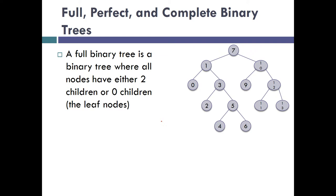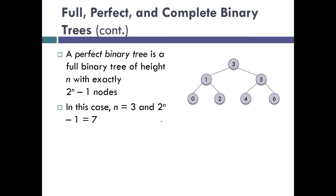Full is easy to see — you'd have to look at it. That's actually probably a really good exam question: write a method that returns true if the tree is full and false if not. Now let's look at full, perfect, and complete binary trees. A perfect binary tree is a full binary tree of height h with exactly 2^h minus 1 nodes.